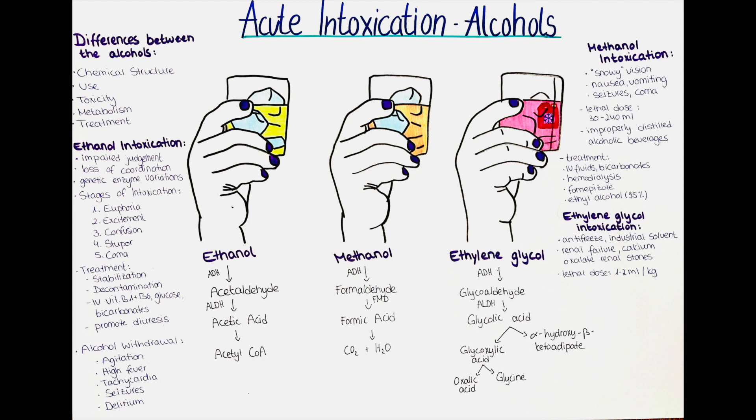Acute intoxication with ethanol can result in a range of symptoms depending on the amount consumed. Mild symptoms can include impaired judgment, loss of coordination and slurred speech, while severe symptoms can include vomiting, loss of consciousness and respiratory depression. In extreme cases, acute ethanol intoxication can result in death due to respiratory or cardiac arrest.